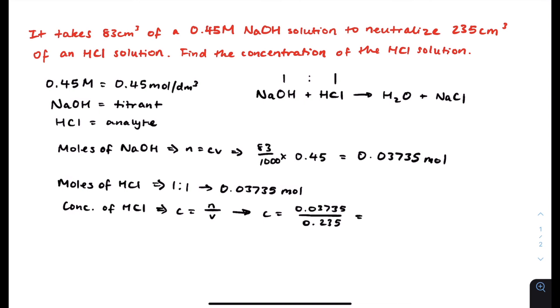If we put 0.03735 divided by 0.235 in our calculator, that's equal to 0.158936 dot dot dot, it goes on and on, which is equal to 0.16 moles per dm cubed, approximately.